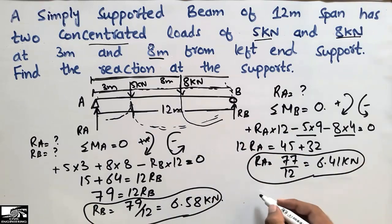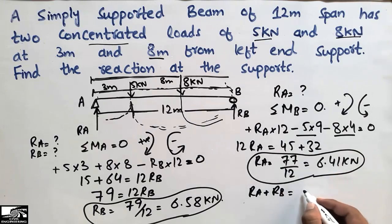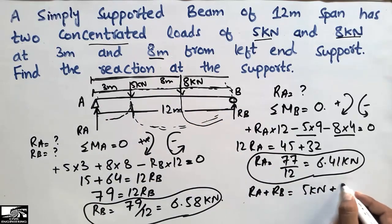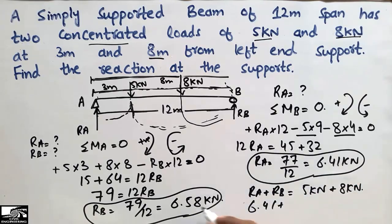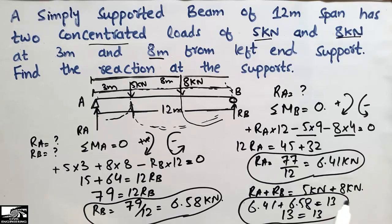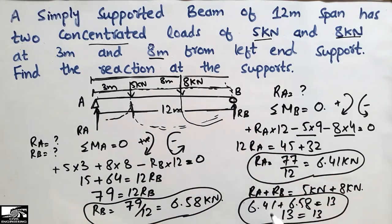To verify, we apply vertical equilibrium: the sum of upward forces must equal the sum of downward forces. The upward forces are RA and RB, and the downward forces are 5 kN and 8 kN. Adding RA + RB = 6.41 + 6.58 = 13 kN, which equals 5 + 8 = 13 kN. This confirms our support reactions were calculated correctly.